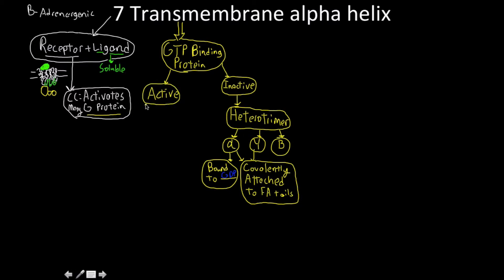So once it undergoes this conformational change here, which is going to cause it to differentiate into the active form, the active form is going to do, or really just two things are going to happen. It's going to lose things and it's going to gain things. So what are the two things that it's going to lose? Well, it's going to lose its GDP.